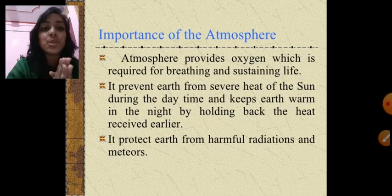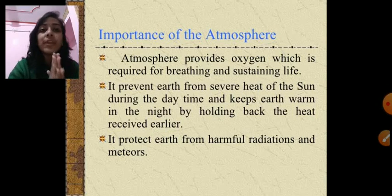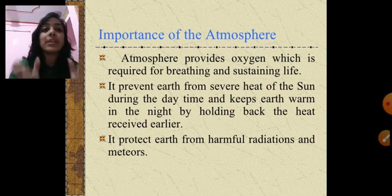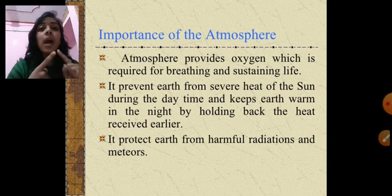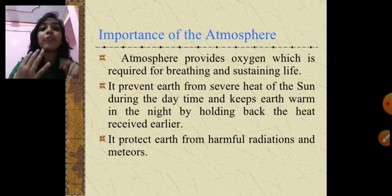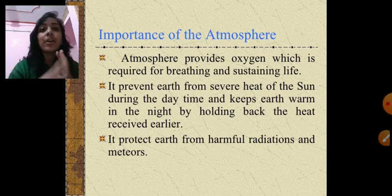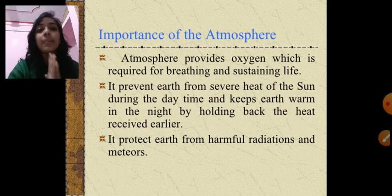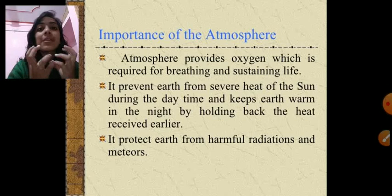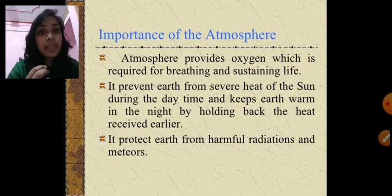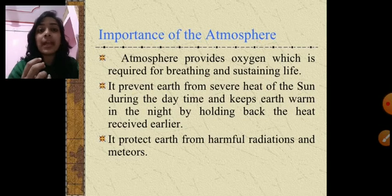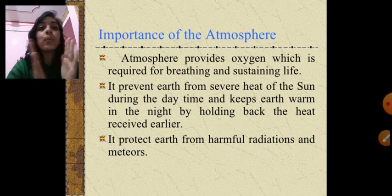The last point is that the atmosphere protects the earth from harmful radiations and meteorites. The atmosphere protects us from the harmful ultraviolet radiation of the sun, which is harmful for plants, animals, human beings, land, water, and the biosphere. The atmosphere also protects us from meteorites, which are rocks that burn up in the atmospheric layer when they enter from the exosphere and would otherwise fall and destroy the earth.